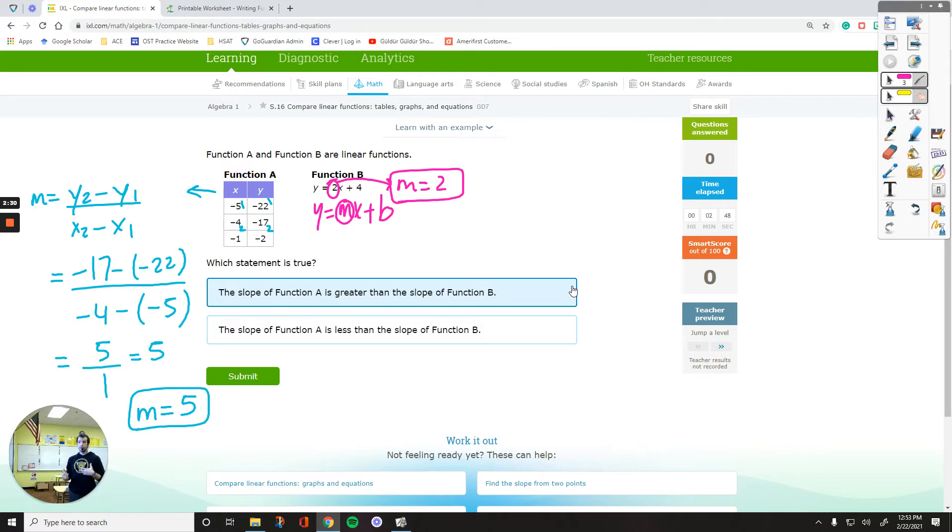Again, what we do is we just use y2 minus y1 over x2 minus x1. You just label one of the rows with 1, another row with 2. It doesn't matter which row is which, by the way, as long as you just label the same line with the same number.